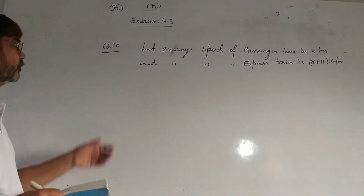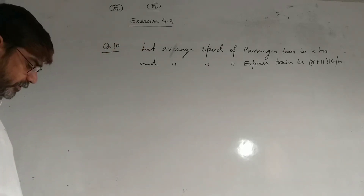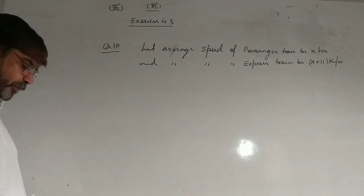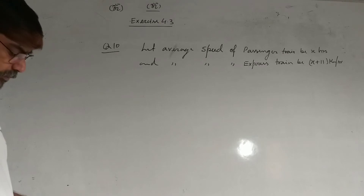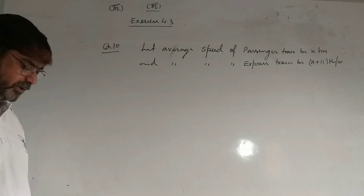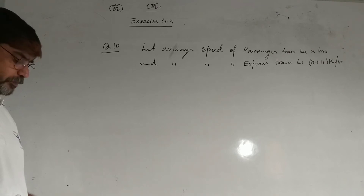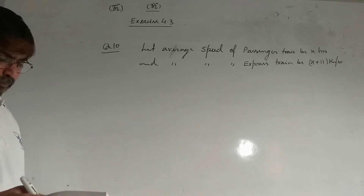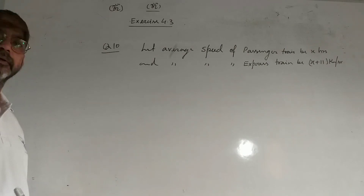Now students, question number 10 from exercise 4.3. The question is: an express train takes 1 hour less than a passenger train to travel 132 km between Mysore and Bangalore. If the average speed of the express train is 11 km per hour more than that of the passenger train, find the average speed of the two trains.